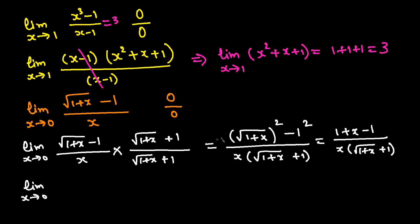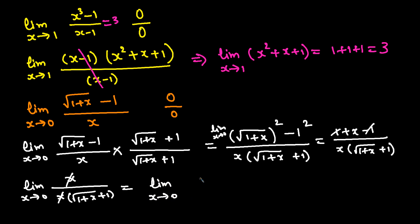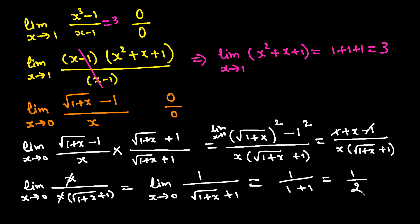After simplification, the x in the numerator cancels with the x in the denominator, leaving limit as x approaches 0 of 1/(√(1 + x) + 1). Plugging in x = 0: 1/(√1 + 1) = 1/(1 + 1) = 1/2. So the limit equals 1/2.